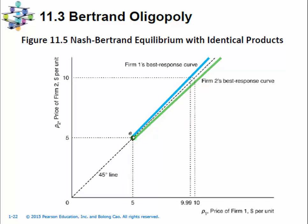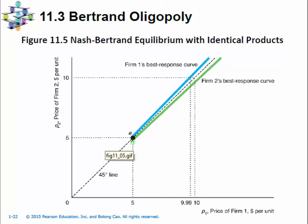At this equilibrium point, both firms are charging the price at their marginal cost, which is the same for both firms: $5. No firm wants to charge below $5 because once the price falls below $5, the firm will lose money on each unit sold. For example, if one firm charges $4.99, it will lose a cent on every unit sold, and the other firm will just shut down and not supply any quantity because it won't make money on selling the product. So no firm will set the price below the marginal cost.